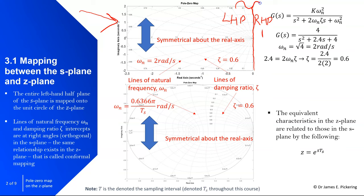The system response in the left half plane gives you a nice response — whether critically damped, overdamped, or underdamped. In the right half plane, you get an unstable response where the response will effectively just grow.